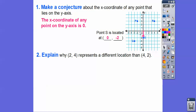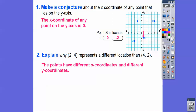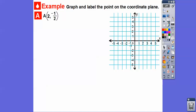Explain why (2, 4) represents a different location than (4, 2). The points have different x-coordinates and different y-coordinates. (2, 4) says go to the right two, up four. (4, 2) says go to the right four, up two. If we go right two and up four, we end up in one place; right four and up two lands somewhere totally different. So they have different locations.